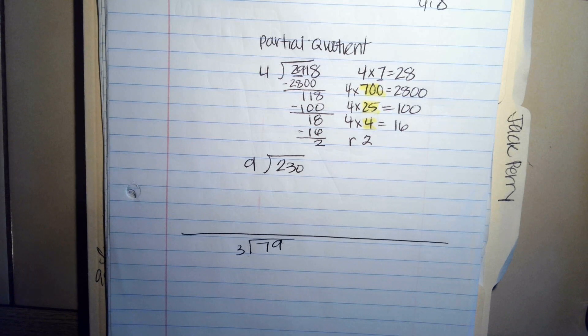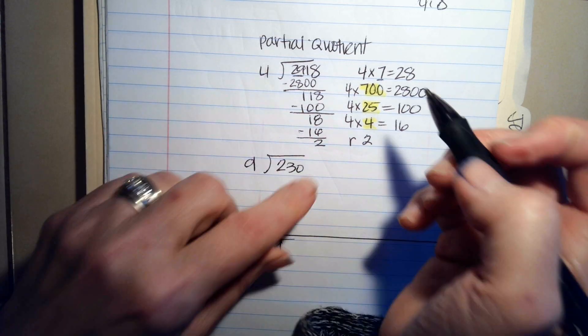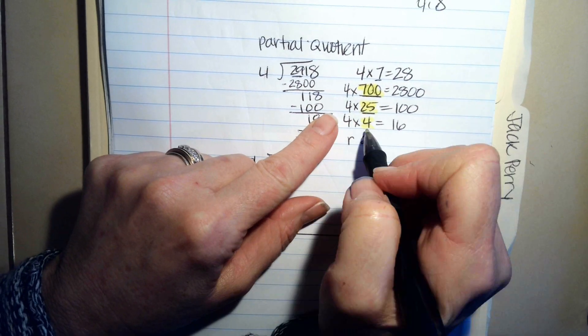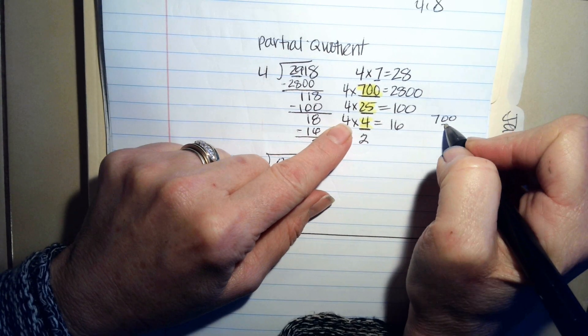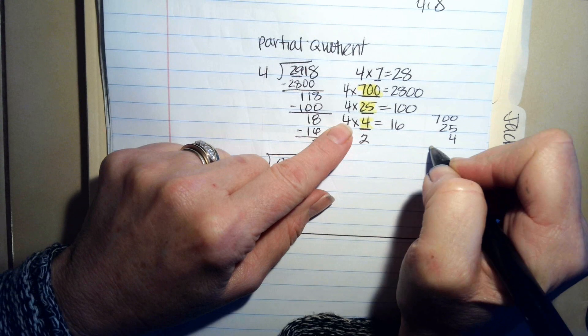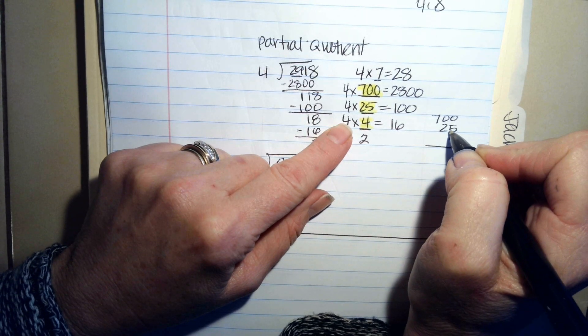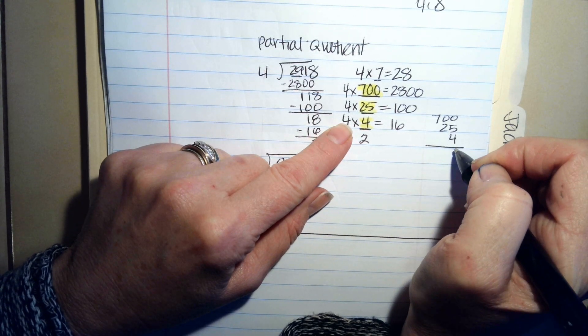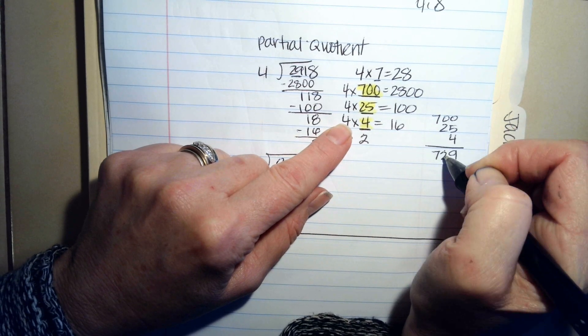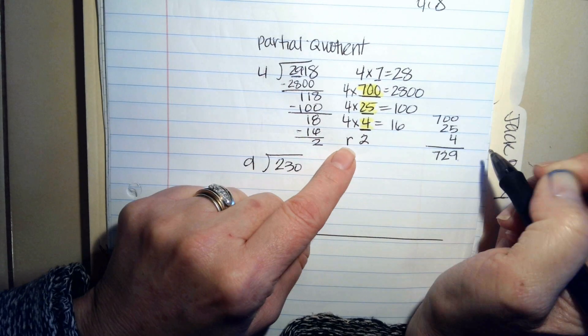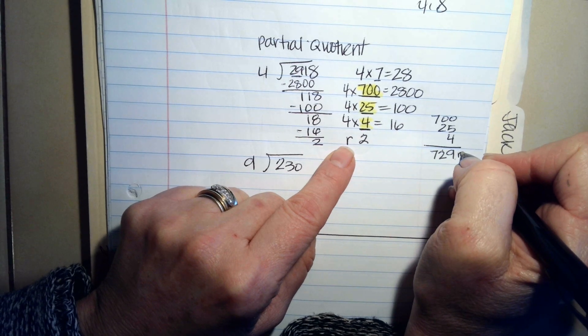So now my answer is 700 plus 25 plus 4, and I know that 700 plus 25 plus 4 equals 729, and then I have to add in this remainder. Remainder 2.